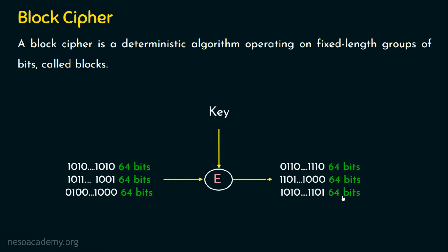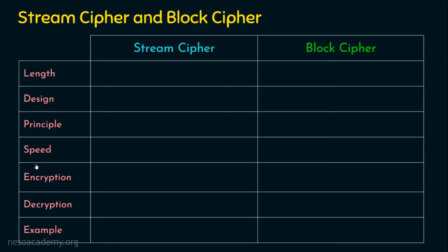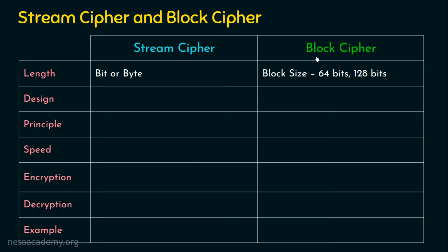Now let's see the differences between stream cipher and block cipher across several parameters: length, design, principle, speed, encryption process, decryption process, and examples. In terms of length, in stream cipher the input size is either a bit or a byte — a byte being 8 bits. In block ciphers, the encryption algorithm takes a block of input, which can be 64 bits or 128 bits, depending on the algorithm used.